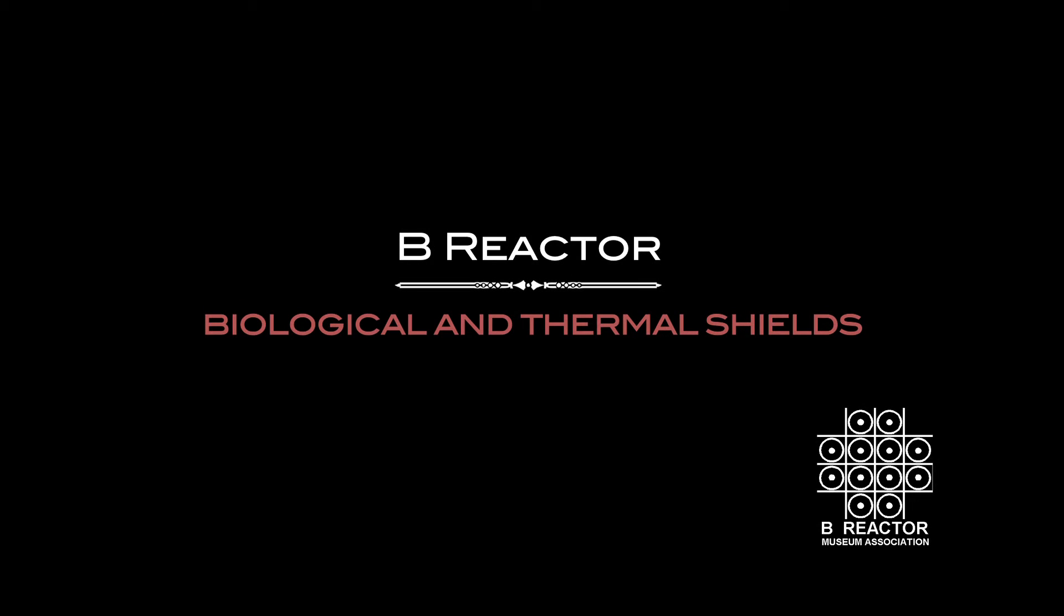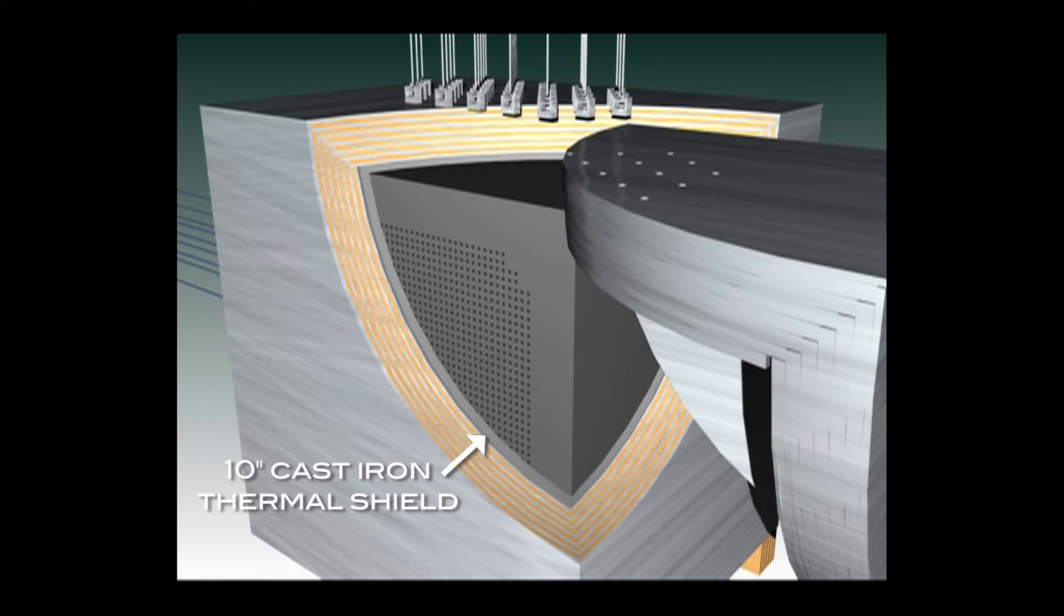Biological and thermal shields. A 10-inch cast iron thermal shield surrounds the graphite stack. The purpose of the thermal shield is to reduce the flow of gamma rays and to capture thermal neutrons before they reach the environment outside the reactor.